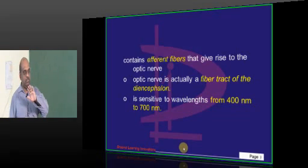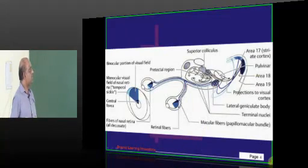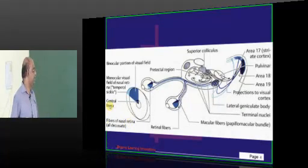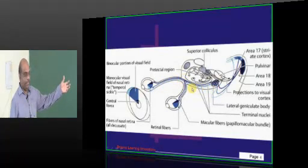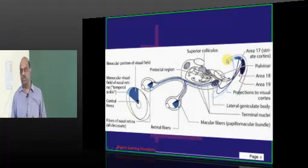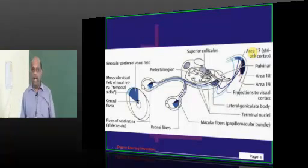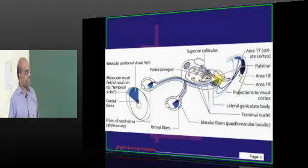It is sensitive to 400 to 700 nanometers. We have reviewed this many times in ophthalmology - the visual fields from the retina, how they pass, how they decussate in the optic chiasma, ultimately landing at the lateral geniculate body and projecting to the visual cortex in area 17. And in the process, what is the importance of the pulvinar nucleus in the thalamus, which is the largest nucleus.